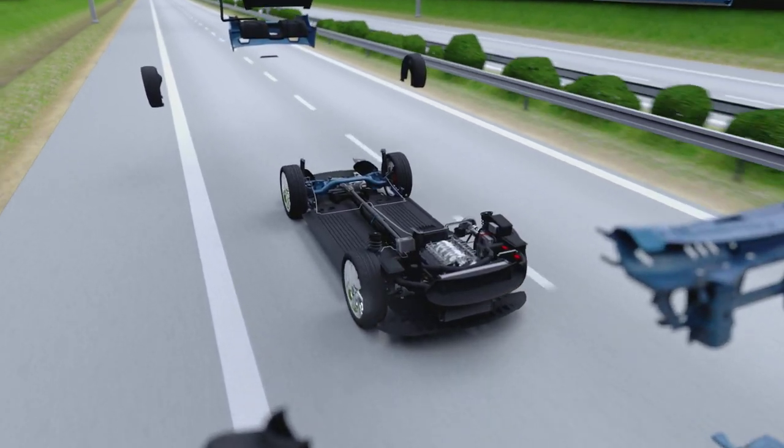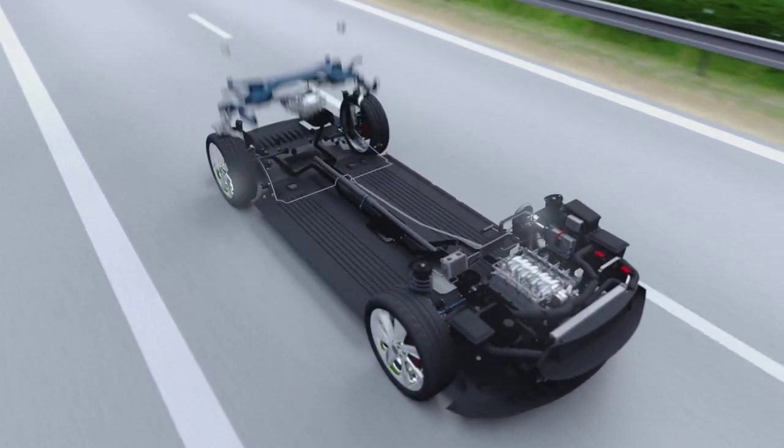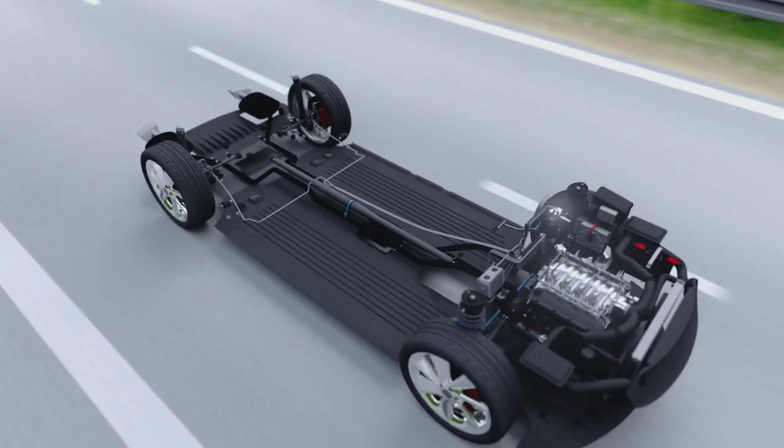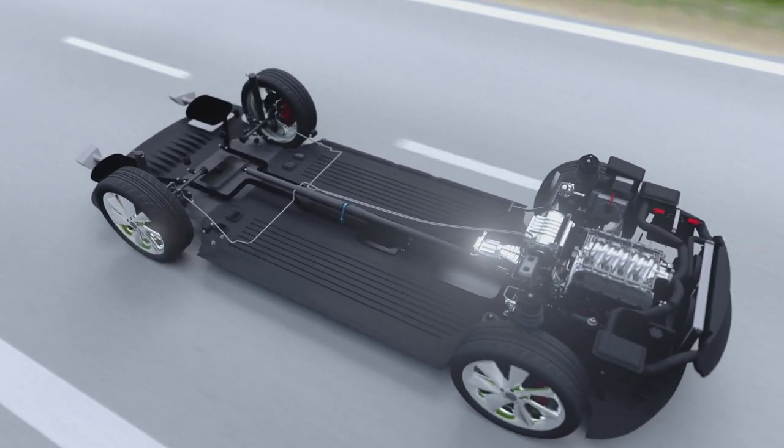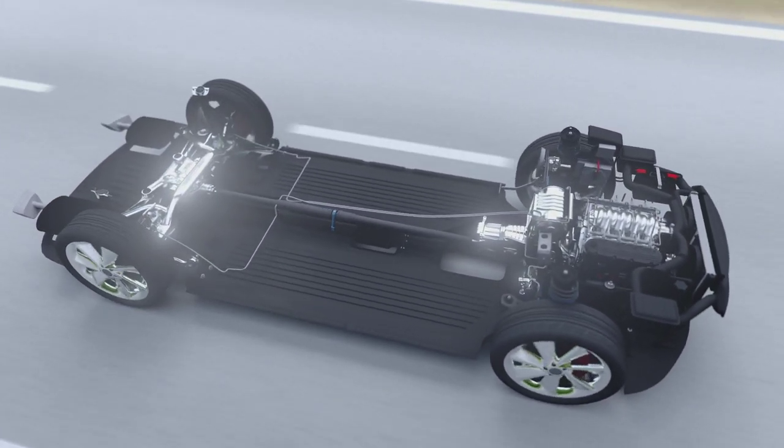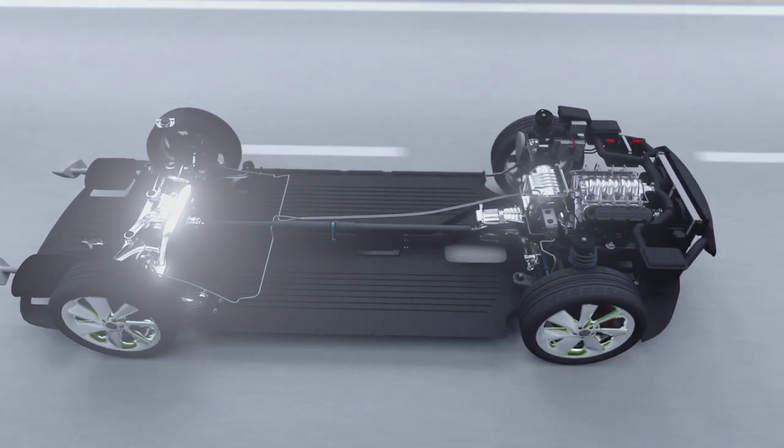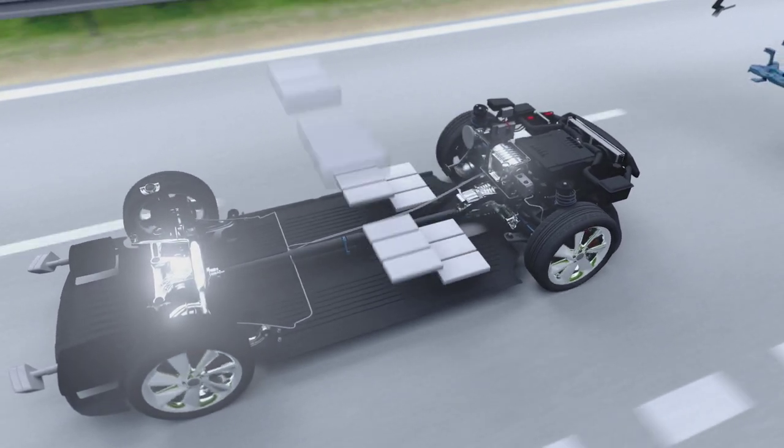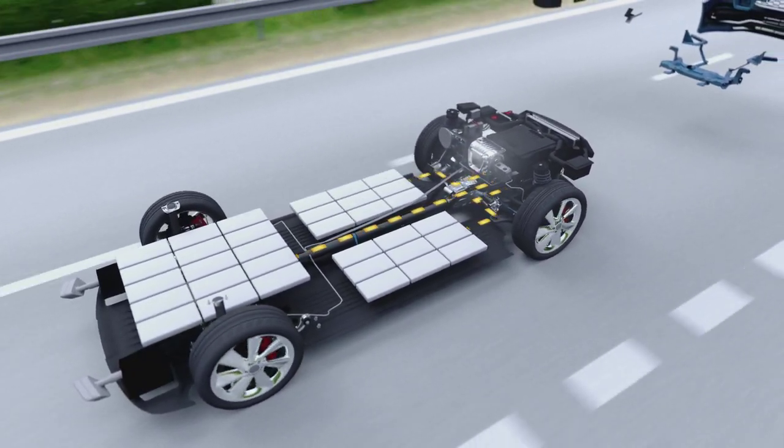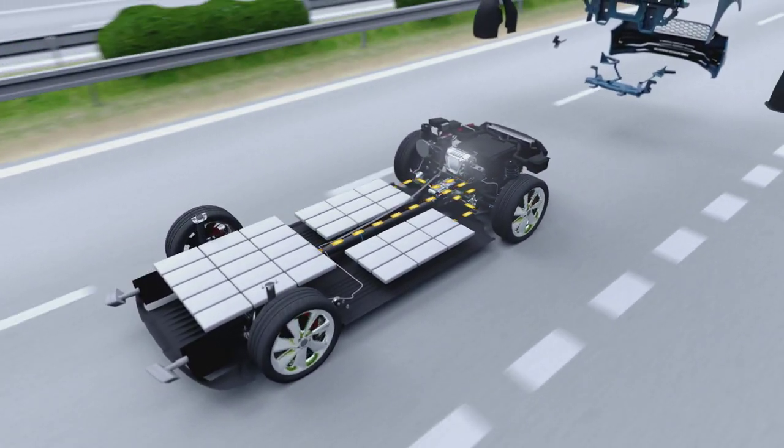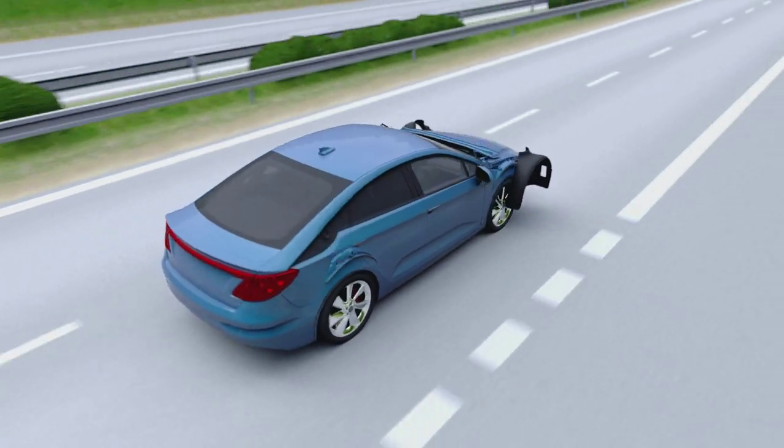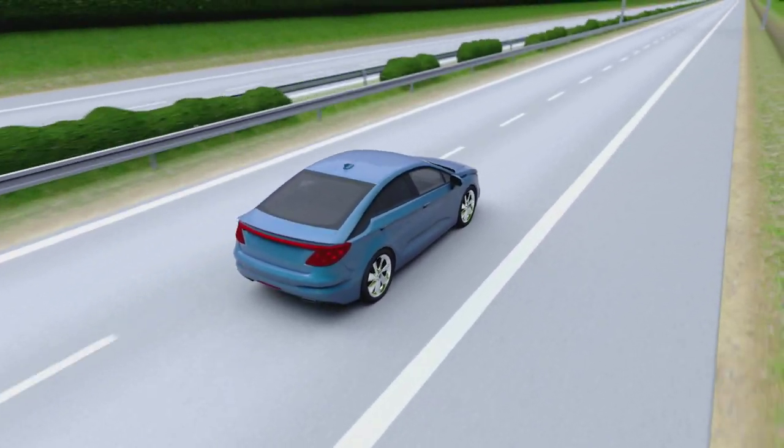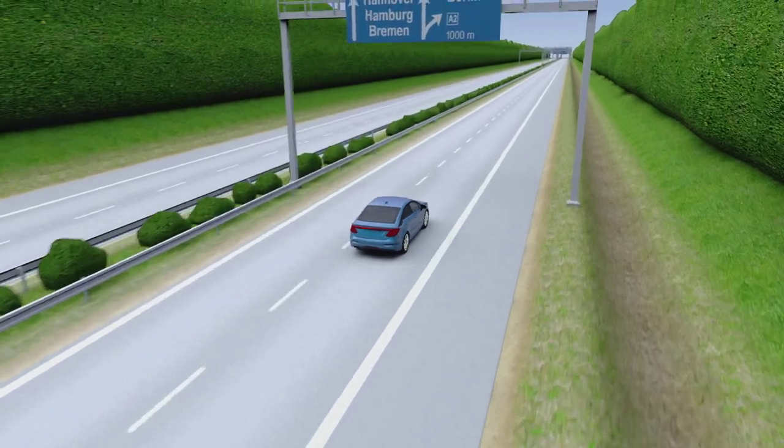A reduction of just 100 kilos noticeably reduces consumption by around half a liter per 100 kilometers. Using this lightweight material also makes sense in the field of electromobility. More aluminum increases the efficiency and thus the range of electric vehicles.